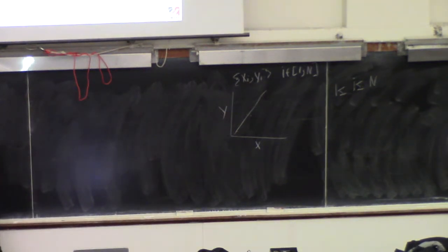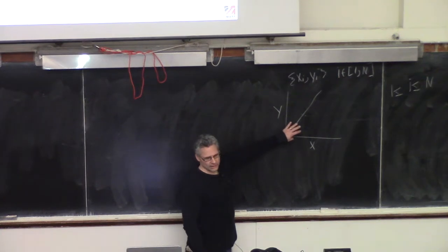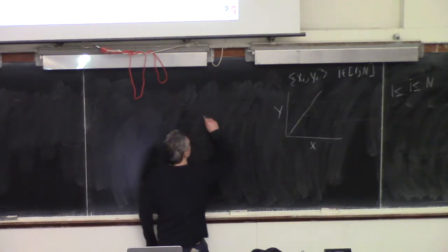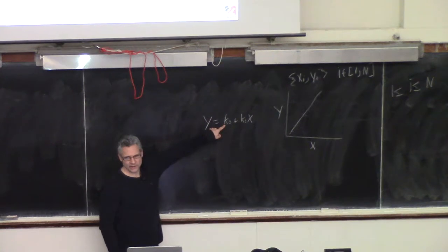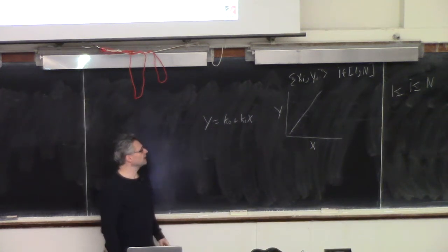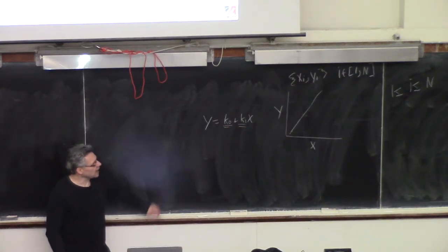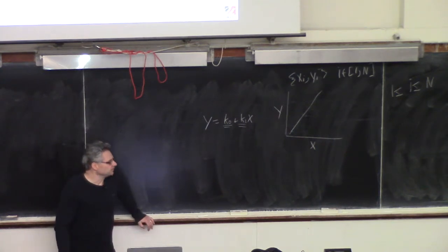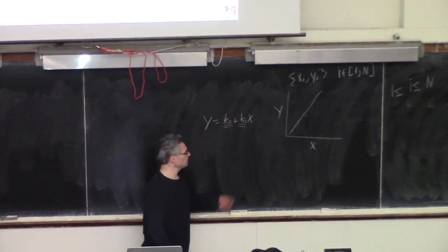We're going to talk about both the regression problem — that's where we already know X has some effect on Y and we're interested in fitting a line to it. When we do that, we're interested not only in fitting a line, but when you fit a line you get K1 as the slope and K0 as the intercept. We'll be interested not only in finding these values, which you guys can already do, but also confidence intervals. We want to know the 95% confidence interval on the slope — we'll be 95% sure the true slope is in some range — same thing for the intercept.